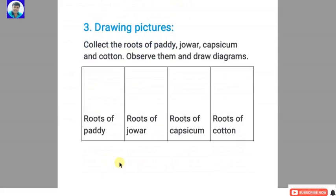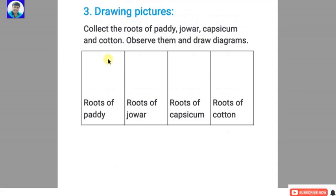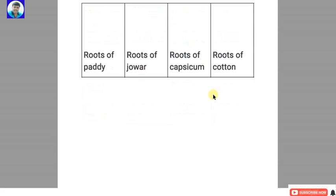Third: drawing pictures. Collect the roots of a paddy, jowar, capsicum, and cotton. Observe them and draw diagrams — roots of paddy, roots of jowar, roots of capsicum, and roots of cotton.